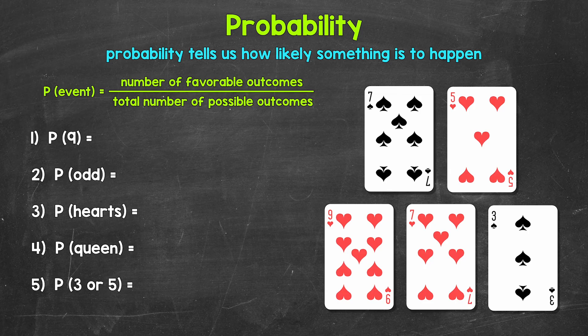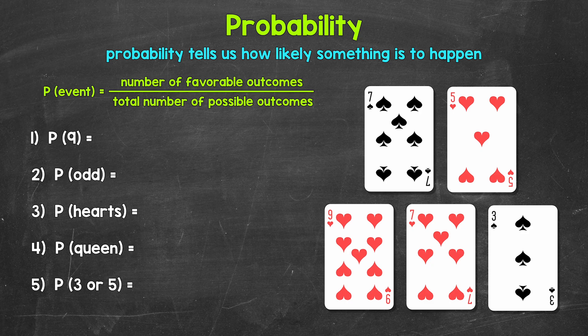We can use the probability formula to find the probability of something. We have P for probability, and then in parentheses we have event. An event is whatever we are finding the probability of — basically, one outcome, one result, or a group of outcomes that we are interested in. The probability of an event equals the number of favorable outcomes over the total number of possible outcomes. The number of favorable outcomes are all of the ways the event can happen. The total number of possible outcomes is the total number of things that can happen — the total number of possibilities.